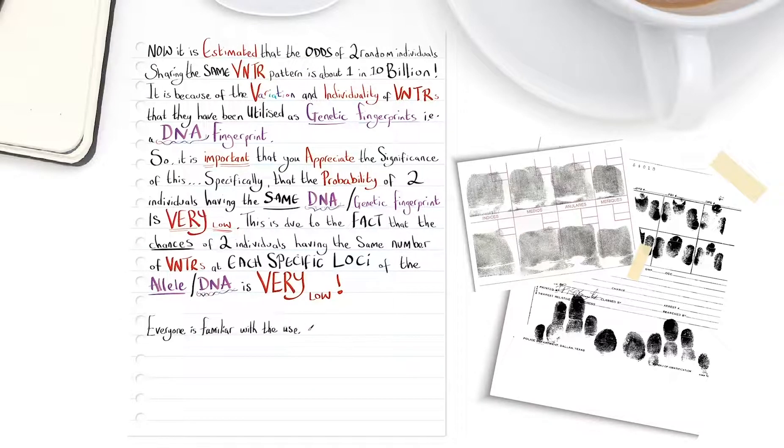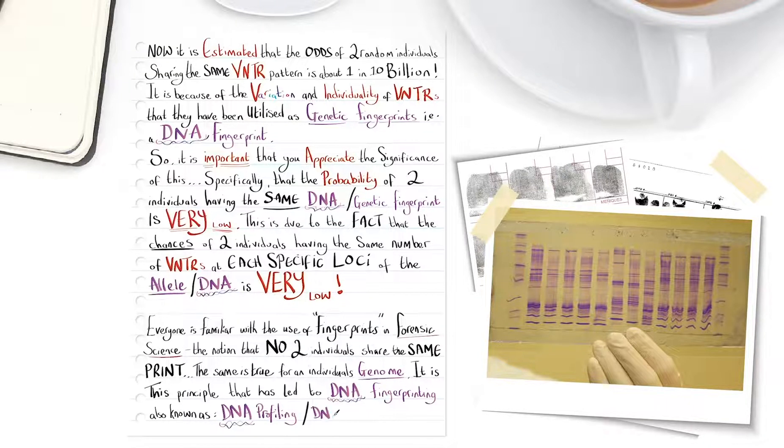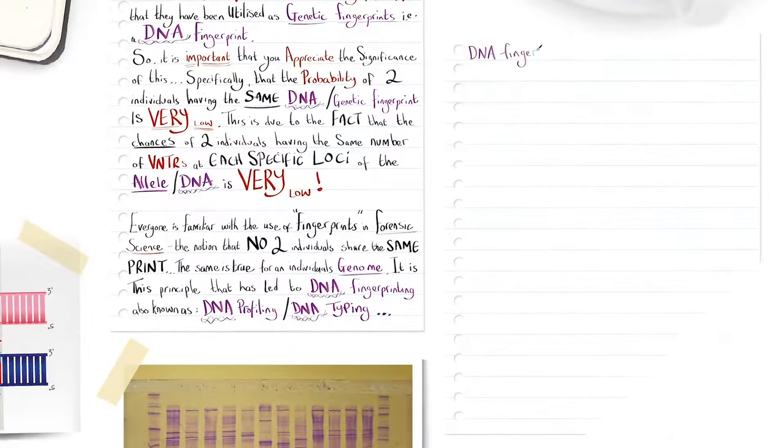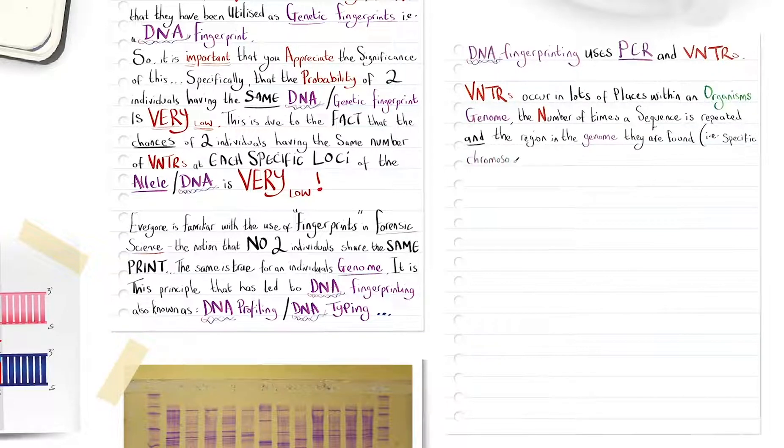Now, everyone is familiar with the use of fingerprints in forensic science, the notion that no two individuals share the same print. And this is true for an individual's genome. It is this principle that has led to DNA fingerprinting, also known as DNA profiling or DNA typing. So, DNA fingerprinting uses PCR and VNTRs. VNTRs occur in lots of places within an organism's genome. The number of times a sequence is repeated, and the region in the genome they are found, specific chromosomes and loci, is used to compare similarities and differences between individuals. And a major application of this is in forensic science.